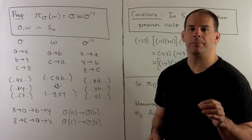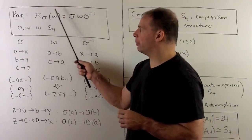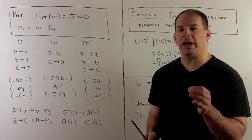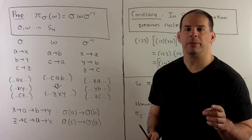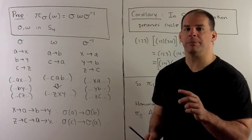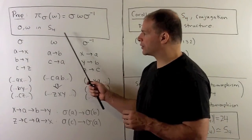For the homomorphism property, we show if we relabel the permutation ω using σ, that's the same as conjugating ω by σ. That means every relabeling by permutation is given by an inner automorphism for S4.